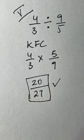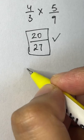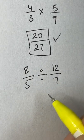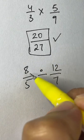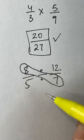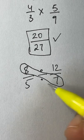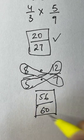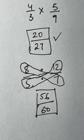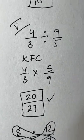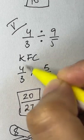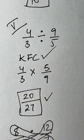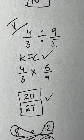One more example: 8/5 divided by 12/7. Instead of KFC, use cross multiplication: 8 times 7 is 56, and 12 times 5 is 60. So the answer is 56 over 60. KFC means keep the first fraction, flip the second fraction, and change the division sign to multiplication. That's it for today — thank you so much for joining, take care, bye!